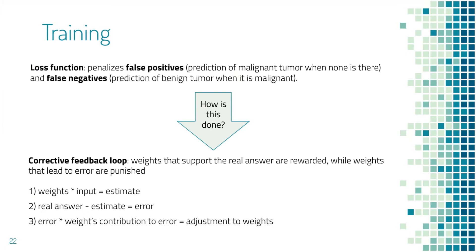If the network doesn't return the correct output for a certain image, it has to be trained. The neural network's training consists of a loss function in which false positives, prediction of a malignant tumor when none is there, and false negatives, prediction of a benign tumor when a malignant one is present, are penalized. During training, the parameters or weights of the network are updated so that the loss is decreased using a corrective feedback loop. First, the network makes an estimate about the image — benign or malignant — using filters which detect the grayscale color and the weights assigned to the pixels. The network then compares the real answer with the estimate and calculates the error. Finally, the network adjusts the weights based on how much they contributed to the error. Weights that support the real answer are rewarded while weights that lead to error are punished. Training is over when the error is below some threshold value or when the error stops decreasing.